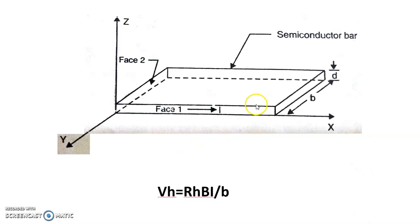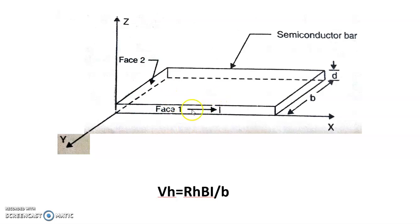Consider a specimen bar carrying a current i in the positive x direction. Let a magnetic field B be applied in the positive z direction. Then, according to Hall effect, a force gets exerted on the charge carriers in the positive y direction.